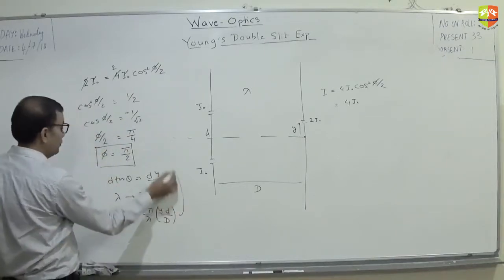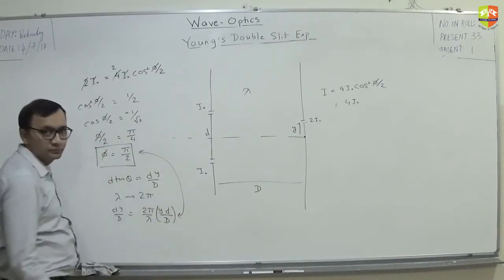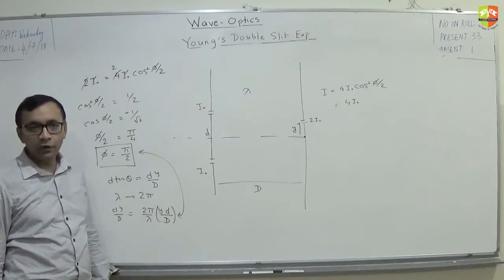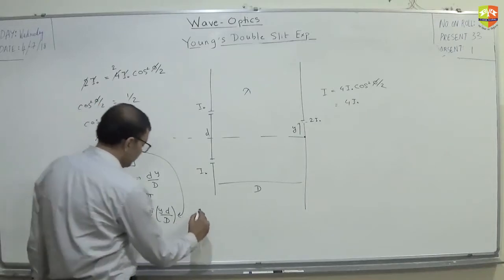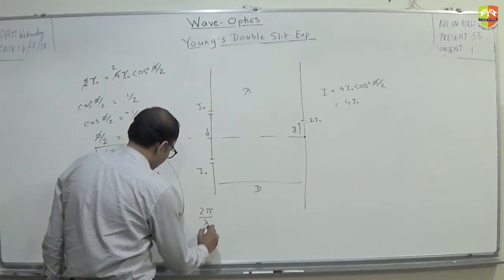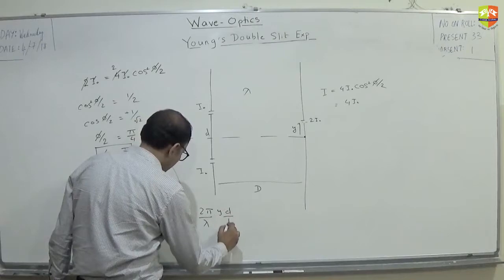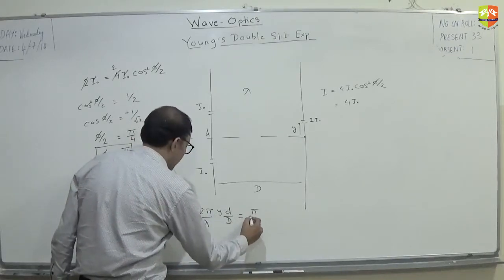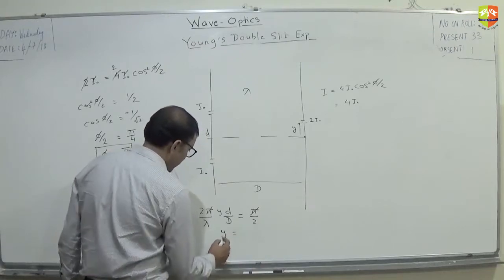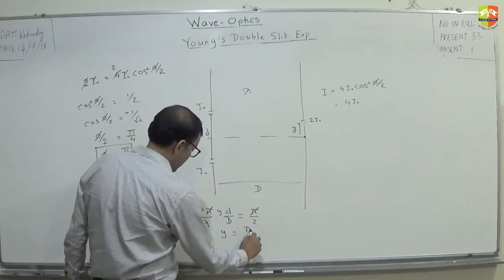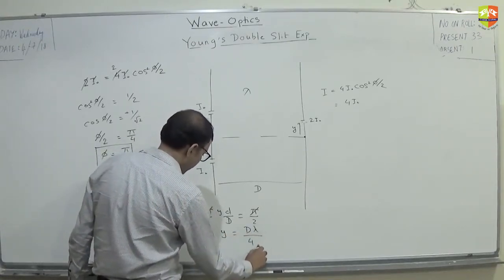So, this should be equal to that. Are you getting my point? Ok. So, when you equate it, what do you get? 2pi by lambda y d by D is equal to pi by 2.